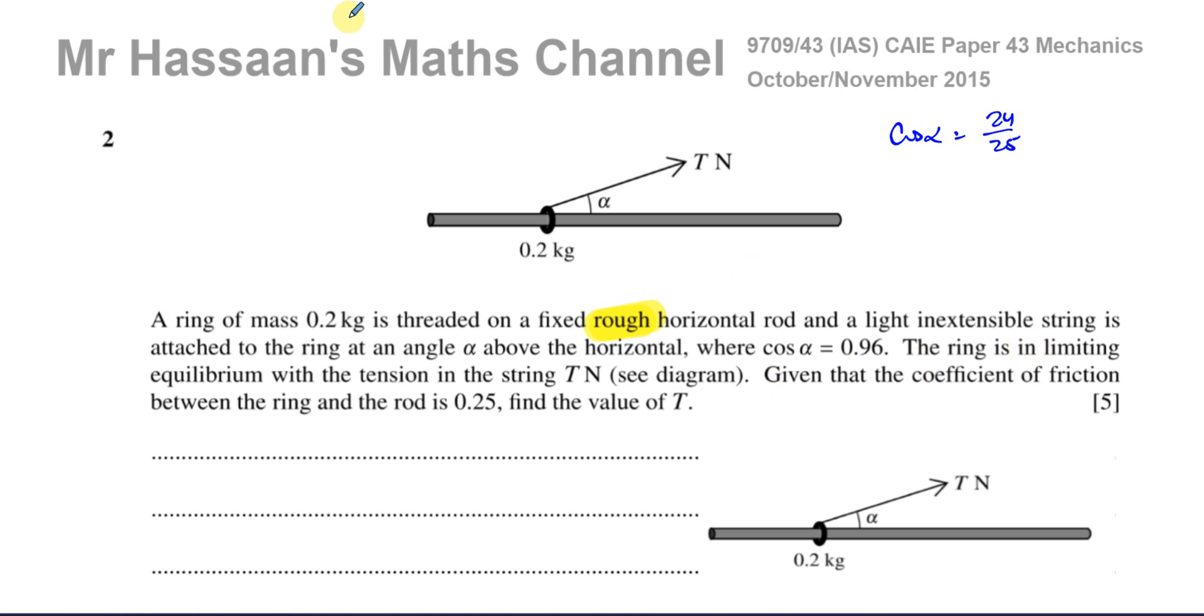The ring is in limiting equilibrium, a very important phrase. That means it's about to move. That means the friction here has reached its maximum value. With the tension in the string T newtons, given that the coefficient of friction between the ring and the rod is 0.25, find the value of T.